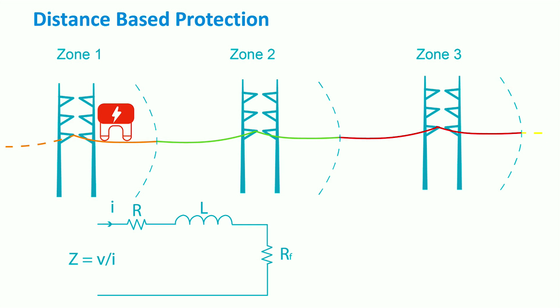During the fault case, when the measured or calculated impedance is lower than the set impedance, the distance relay trips the circuit breaker. Distance protection can be affected by distributed generation and loads, as the measured impedance is a function of the in-feed currents.